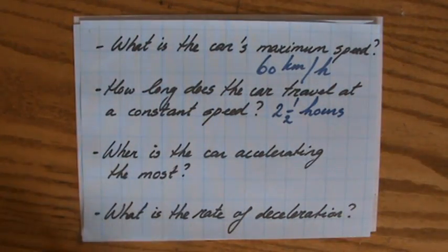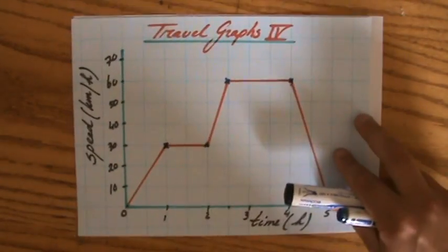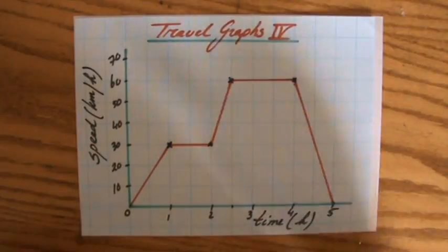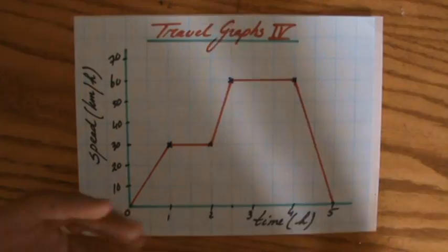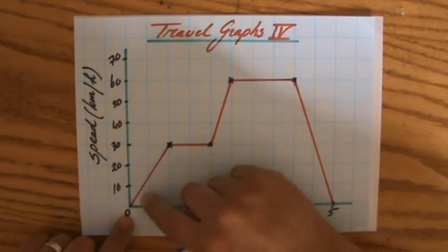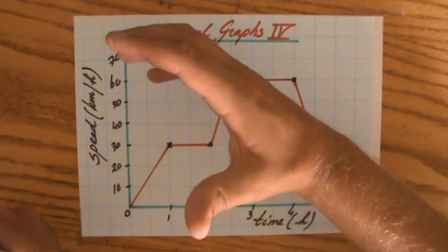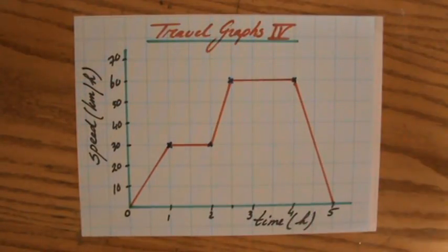When is the car accelerating the most? You realize that the acceleration for a speed-time graph is given by the gradient of the graph. My speed is zero, my speed is 30 in one hour and I am accelerating, I am giving gas, I am going faster and faster.